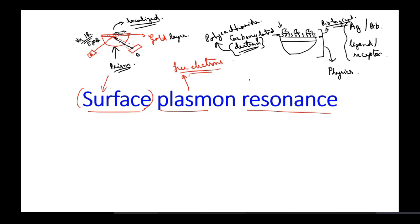All these analyses are done without using any label — no labels are required — and all the analyses are basically real-time. With other analytical tools studied previously, we needed extensive sample preparation. Here, you just need to take your sample, do very minimal sample processing, inject it into the surface plasmon resonance sensor chip system, and you get results on a real-time basis.